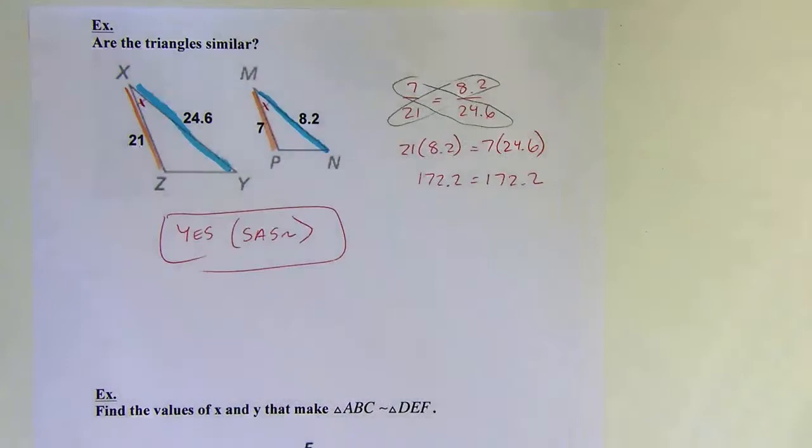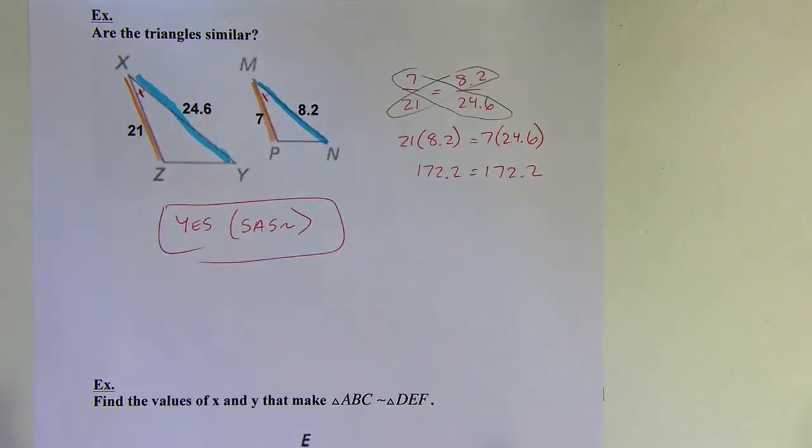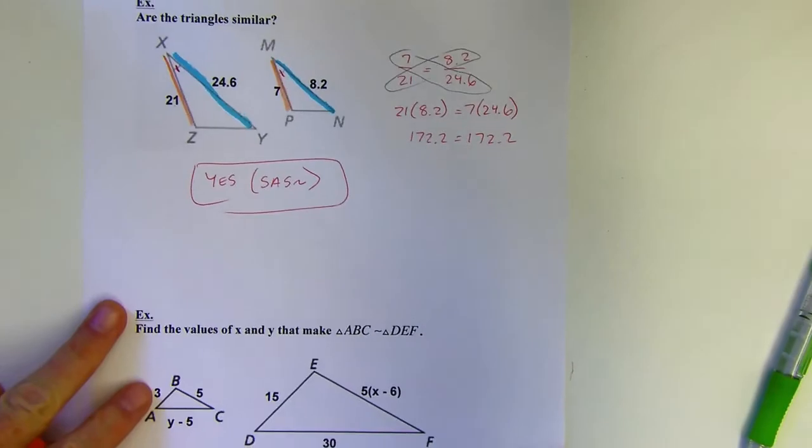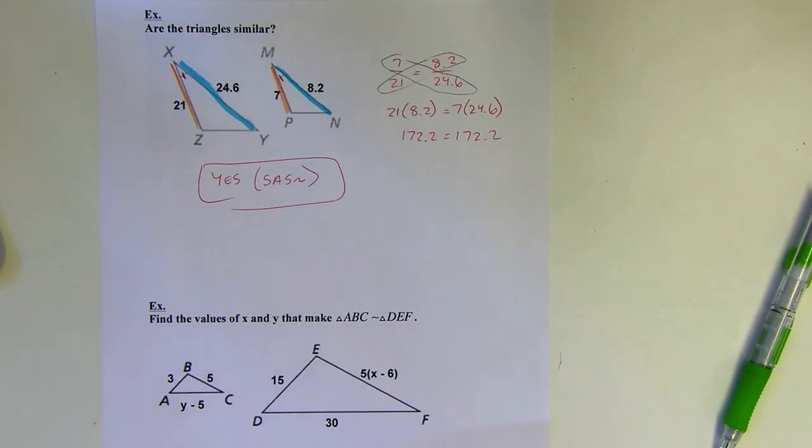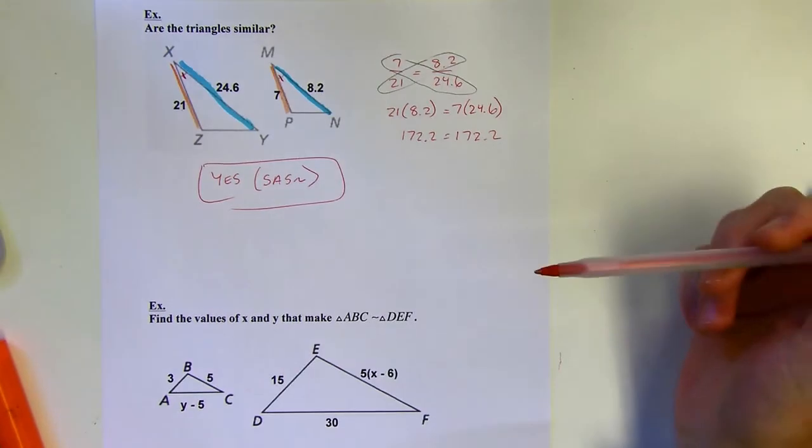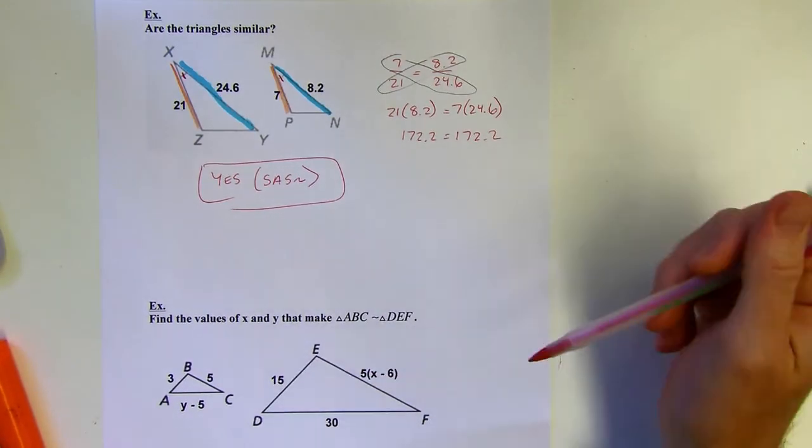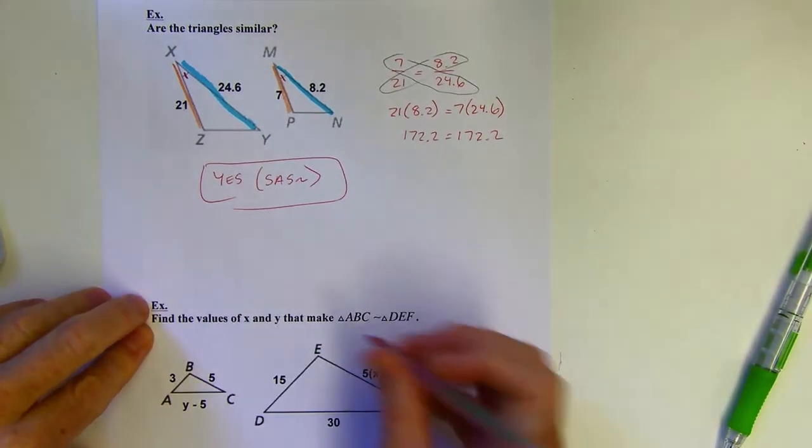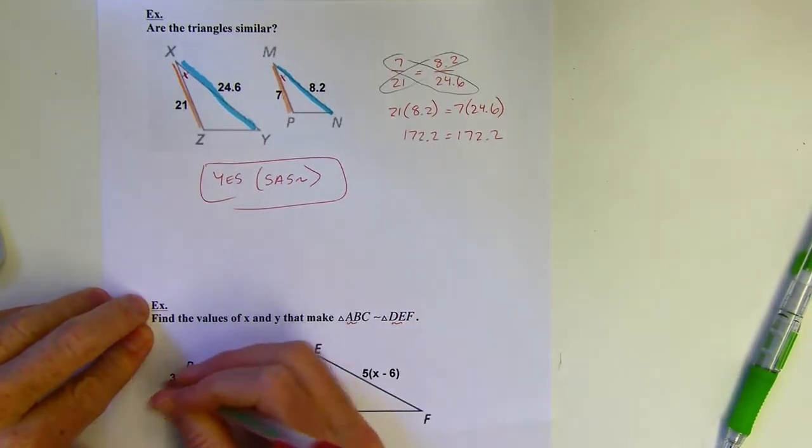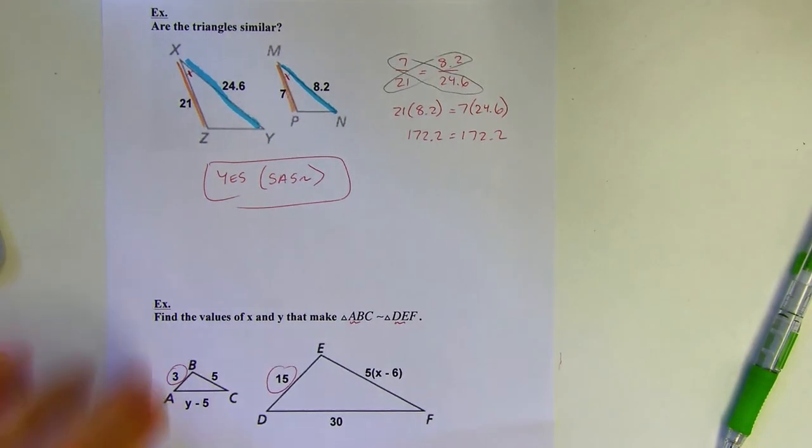All right. So second to last one. This says find the x and y values that make the triangles similar. So if these triangles are similar, then I know the sides are going to be in proportion. I'm actually not going to deal with the angles here. I'm not interested in the angles because all of the expressions are for the sides. All the sides would be in proportion. And I can see a, b would match up with d, e. And just visually, you can probably see those are going to be matching pieces. So I'll solve for x first.